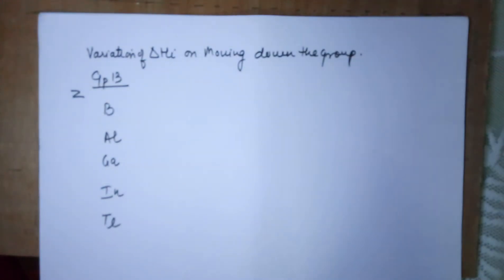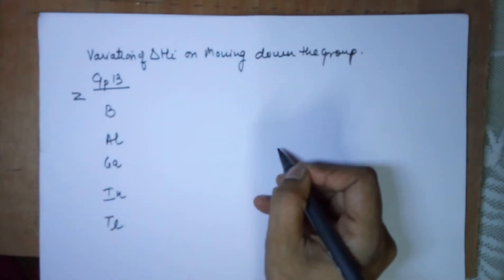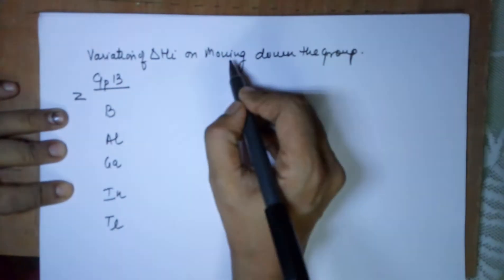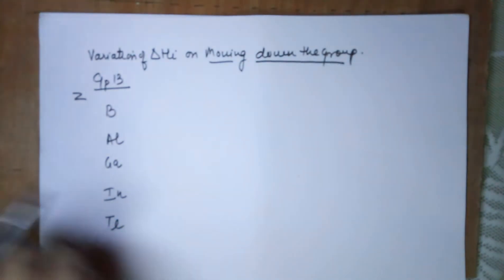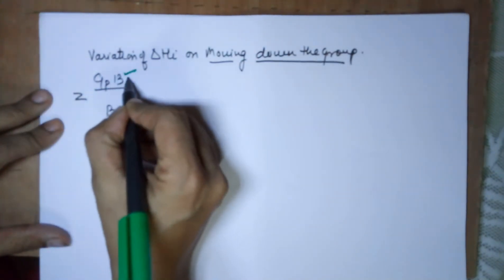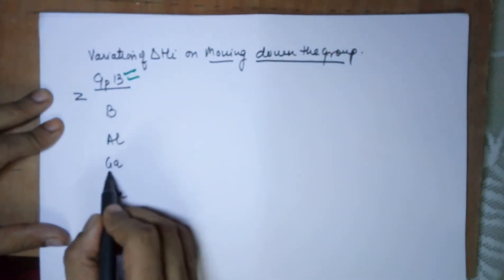Good evening students. In today's class I'll be talking about variation of ionization energy on moving down the group. I've taken a specific example of group number 13. The members of group number 13 are boron, aluminum, gallium, indium, and thallium.